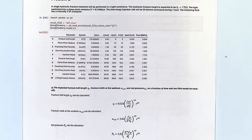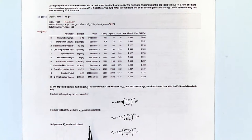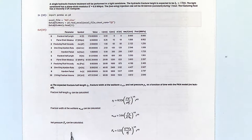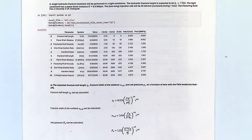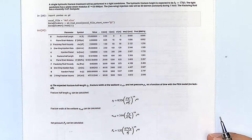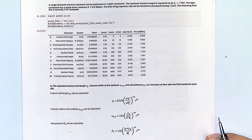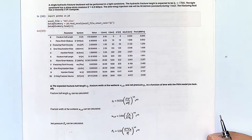Problem number two is an application of the PKN equations — how to calculate fracture length, fracture width, and net pressure with time. I recommend that when you see this on the exam you convert everything to SI units first, then convert back to whatever units the problem asks for. If you mix units you may get a wrong answer.